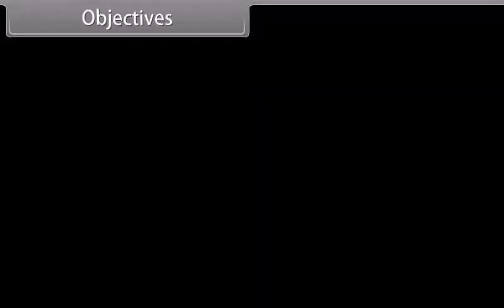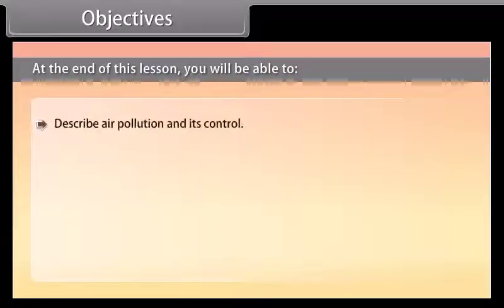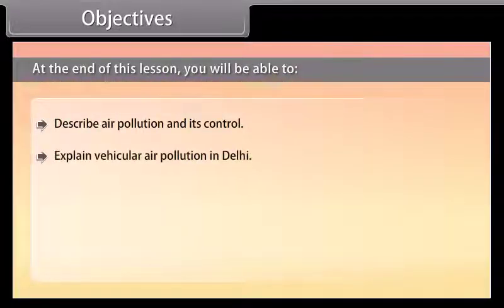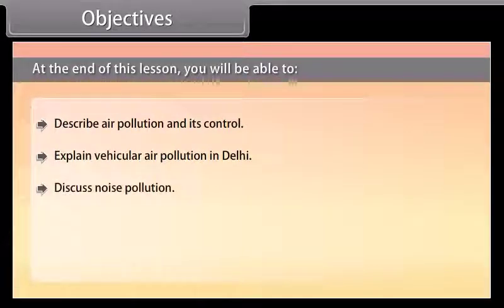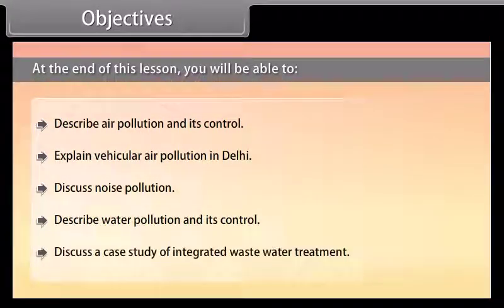Objectives. At the end of this lesson, you will be able to: describe air pollution and its control; explain vehicular air pollution in Delhi; discuss noise pollution; describe water pollution and its control; and discuss a case study of integrated waste water treatment.